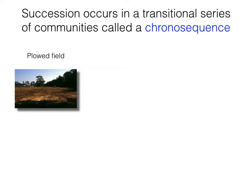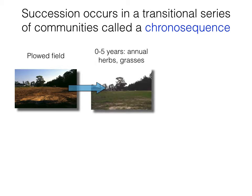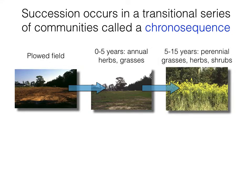Let's take a look at the progression of succession in an old field. The first picture is a plowed field. In the first zero to five years, annual herbs and grasses begin to establish — species that live for a single year, sometimes a couple of years. Between five and 15 years, perennial plant species — those that live for more than one year — including perennial grasses, herbs, and shrubs begin to establish and displace the earlier annual species.